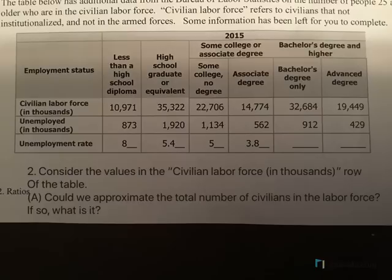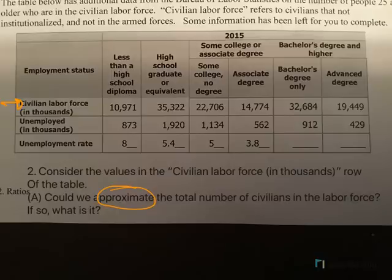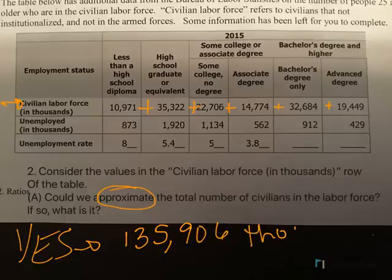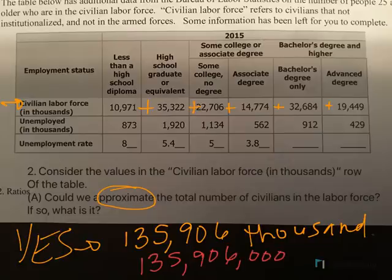Consider the values in the civilian labor force in thousands row. Could we approximate the total number of civilians in the labor force? The key word here is approximate, because we know that every day these numbers change — people earn degrees every day, people die every day. So approximate is the key word. Yes, we absolutely can, and we would just add all of these numbers together. If I add all of those numbers together, I end up with 135,906,000. Since it says thousands, that means three zeros, making it roughly 135 to 136 million.